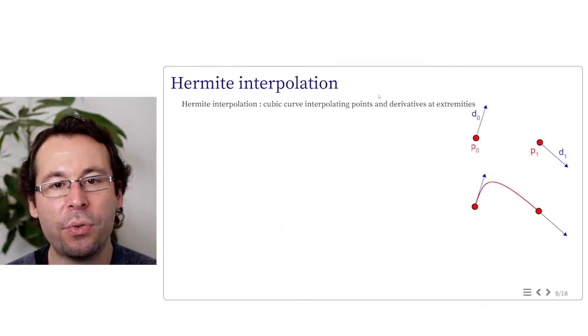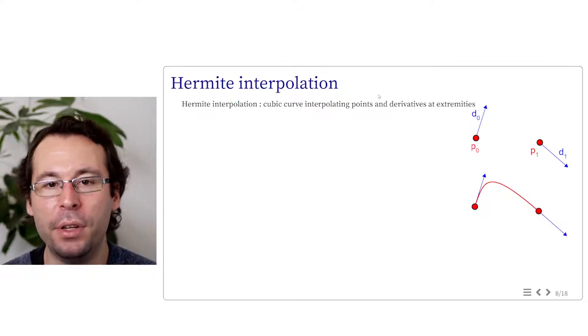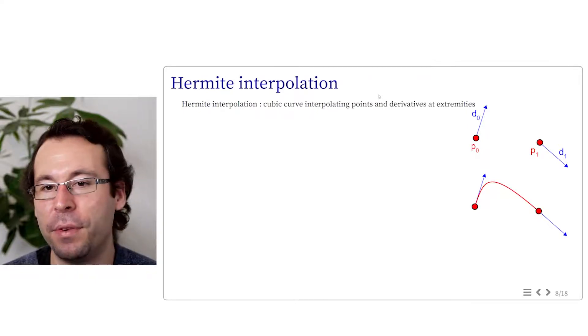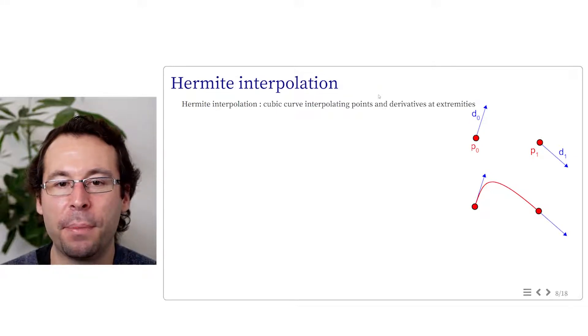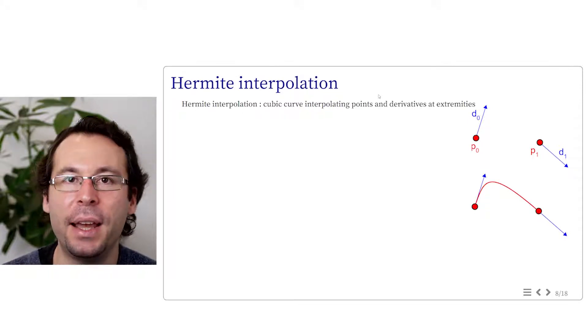If I want to interpolate between two positions using a cubic polynomial, I need four constraints. I have, of course, the two positions. And then we can add, for instance, the value of the derivatives at these points. So this representation is actually called a Hermit curve. It's a curve defined by extremity and derivatives.